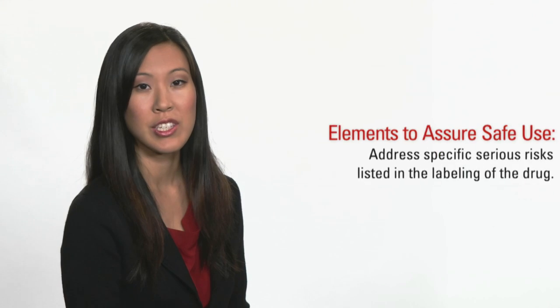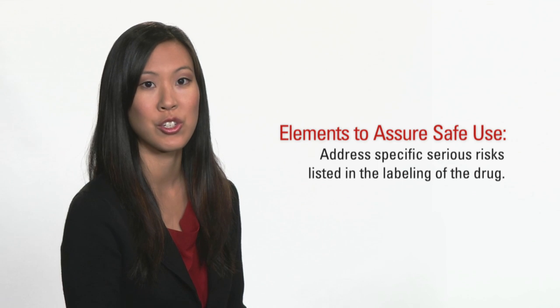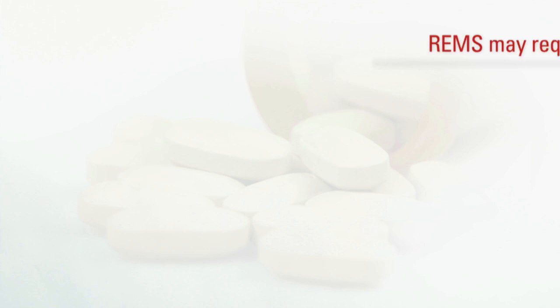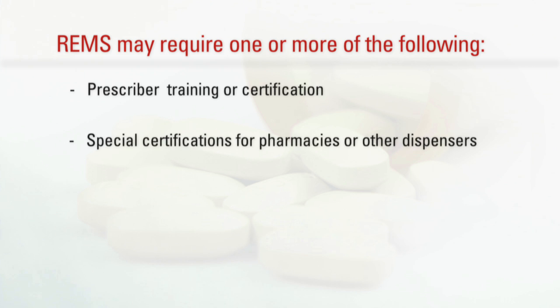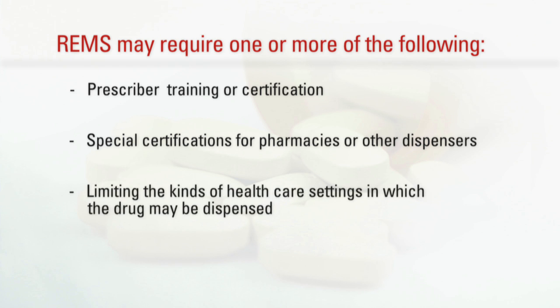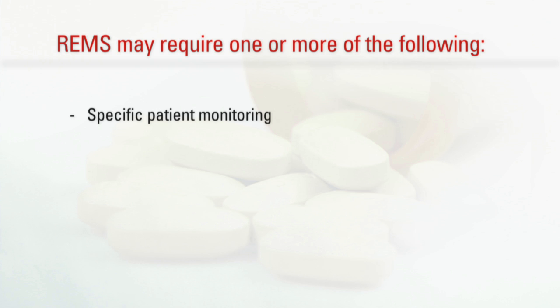Elements to assure safe use are intended to address specific serious risks listed in the labeling of the drug. Depending on the risk, a REMS may require one or more of the following: prescriber training or certification, special certifications for pharmacies or other dispensers, limiting the kinds of healthcare settings in which the drug may be dispensed, documentation or other evidence of safe use conditions prior to dispensing, specific patient monitoring, or enrolling patients in a registry.